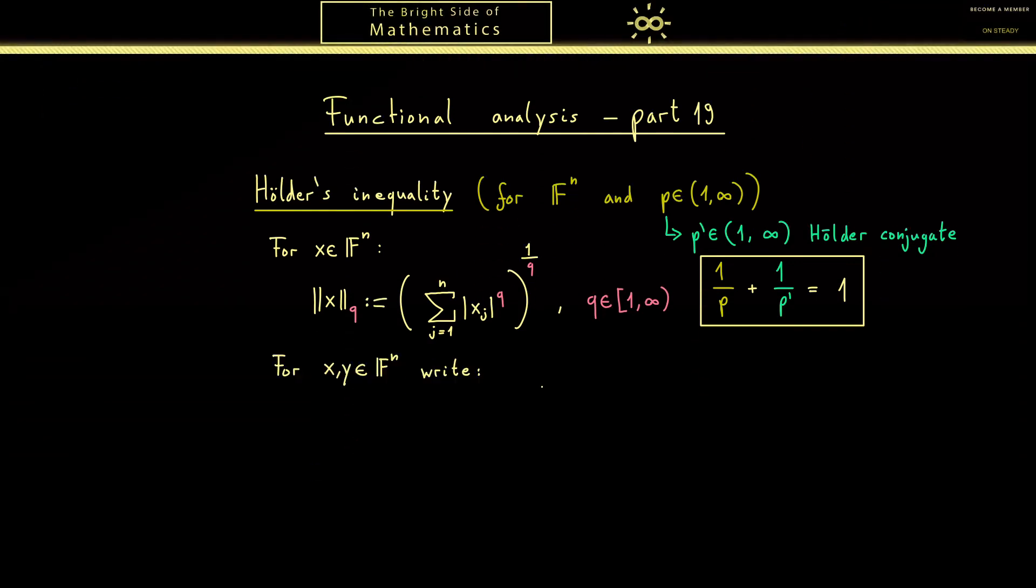I will now use a possibly strange notation to help you remember the important inequality. Putting two vectors together just denotes a new vector which has the product in the components. So x_2*y_2 in the second component and x_n times y_n in the last component.